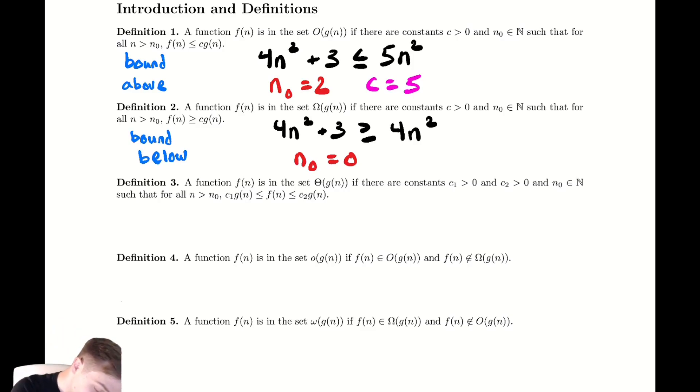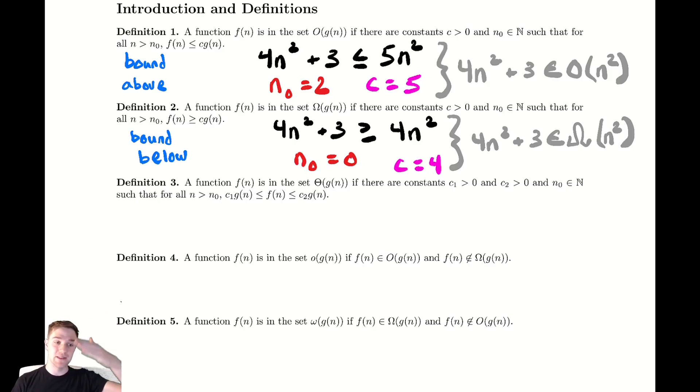Our constant here is going to be 4. So our first observation up above is that 4n² + 3 is in, it is a member of the set, big O of n². The second observation from our big Ω part is that 4n² + 3 is in big Ω of n². Notice I don't include that constant 5 and that constant 4. Those are part of the definition. The function g(n) does not inherently have those constants appearing in it.